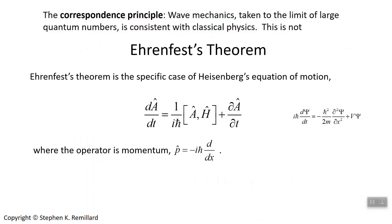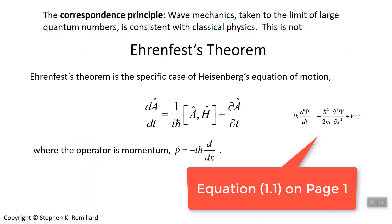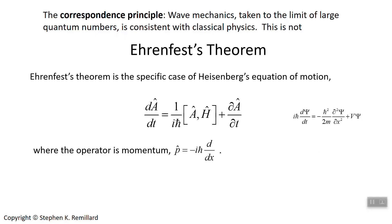For example, if our textbook Griffiths were written in the Heisenberg picture, then equation one — which is Schrödinger's equation — would have to be replaced with the Heisenberg equation of motion, and everything would build from that, making it a very different book. What's interesting is that the results are the same — for example, expectation values of observables are the same in both the Heisenberg picture and the Schrödinger picture.